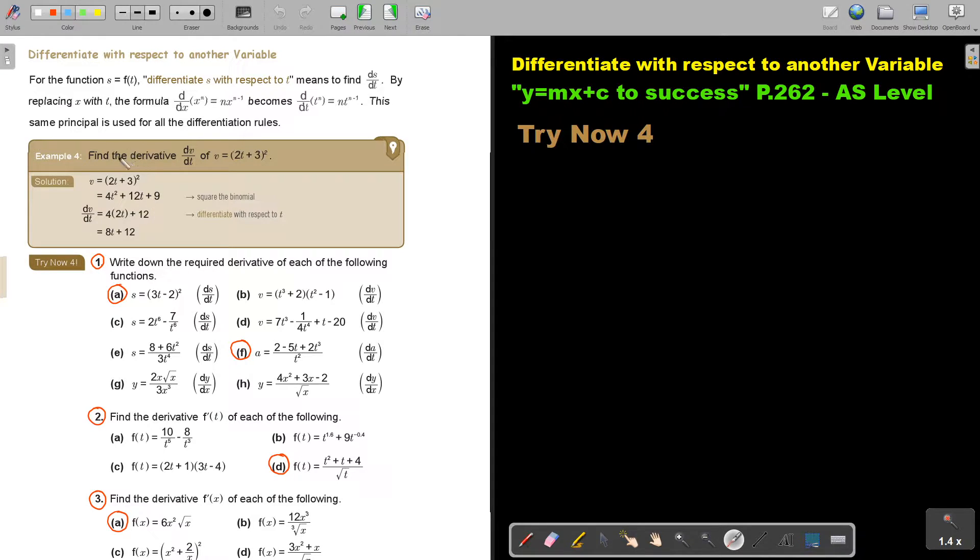So let's look at an example. Find the derivative dv over dt and there's dv of v equals and there's t. Now remember, before we can differentiate, we must just multiply that brackets out. So before we differentiate, just multiply the brackets out. You can say the first term square and then the middle term I find by multiplying the two terms and multiplying by two and the last term square.